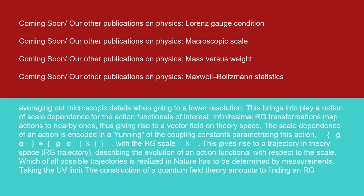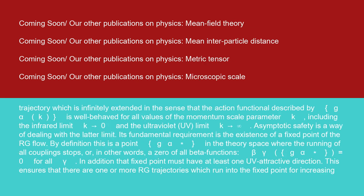Taking the UV limit: the construction of a quantum field theory amounts to finding an RG trajectory which is infinitely extended in the sense that the action functional described by G_α(k) is well-behaved for all values of the momentum scale parameter k, including the infrared limit k→0 and the ultraviolet UV limit k→infinity. Asymptotic safety is a way of dealing with the latter limit. Its fundamental requirement is the existence of a fixed point of the RG flow. By definition, this is a point G_α* in the theory space where the running of all coupling stops, or in other words, a zero of all beta functions: β_γ(G_α*) equals zero for all γ. In addition, that fixed point must have at least one UV attractive direction. This ensures that there are one or more RG trajectories which run into the fixed point for increasing scale.